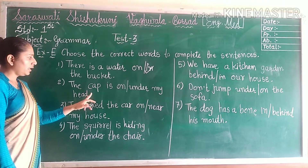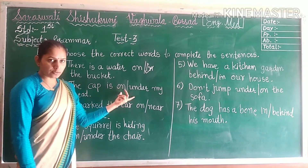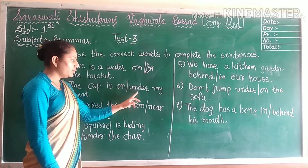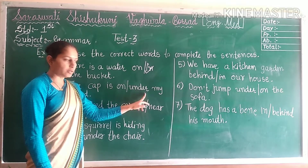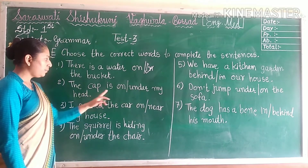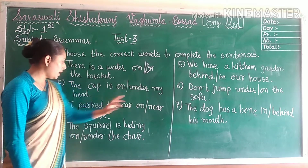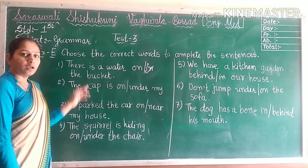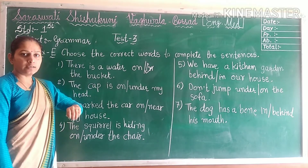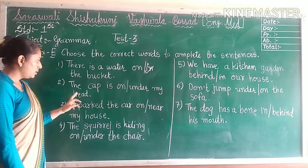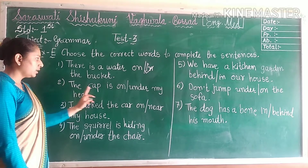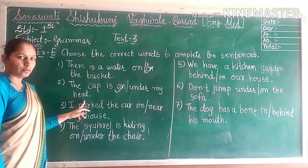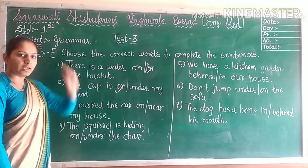Next. The cap is — blank — my head. Here also two options are given: ON or UNDER. The cap is on my head. So where can we put a cap? ON the head or UNDER the head? ON. Right. So our answer is: the cap is on my head.